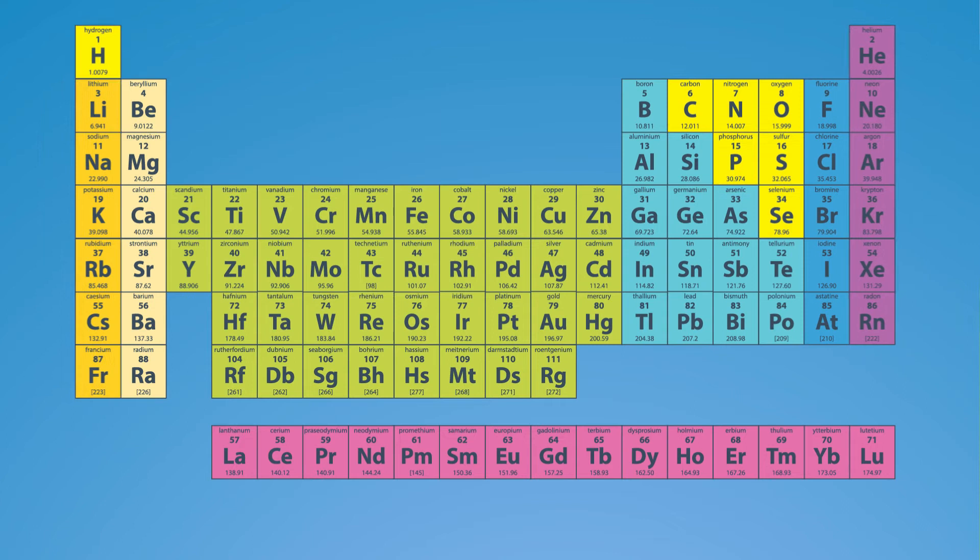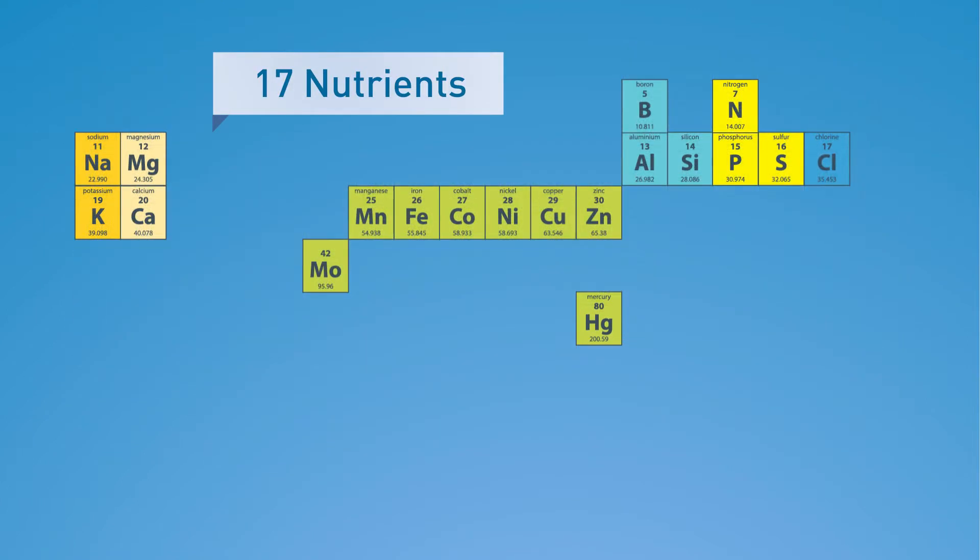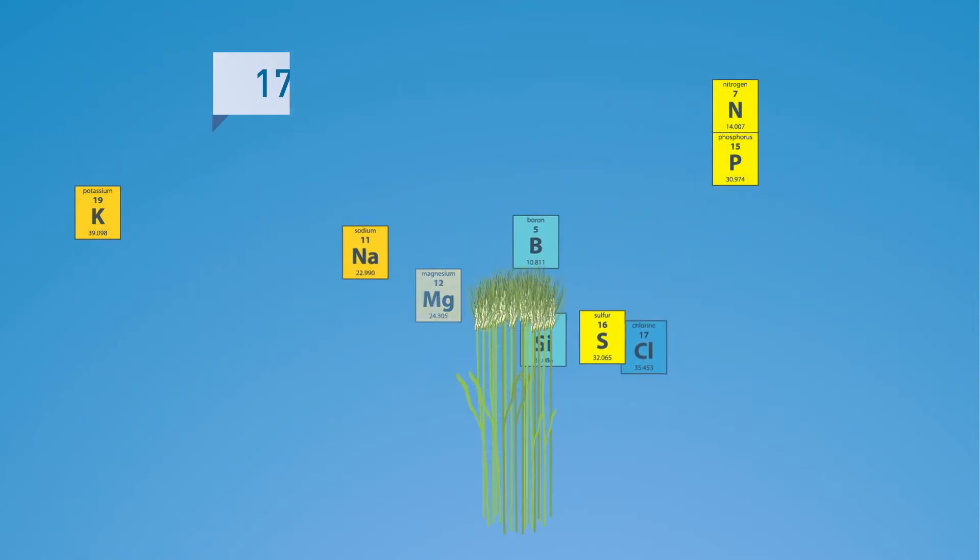Plants require 17 essential nutrients. The primary nutrients are nitrogen (N), phosphorus (P), and potassium (K).